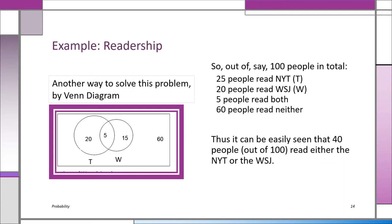Another way to look at this problem is with a Venn diagram, using 100 people to represent 100%. The 60 people out of 100 who don't read anything makes sense — we saw that the probability of reading anything was 40%. The overlap is 5 people (0.05). Adding: 5 + 15 = 20 people read the Wall Street Journal; 5 + 20 = 25 people read the New York Times. So 20 people read the Times but not the Wall Street Journal, and so on — the Venn diagram lays it all out clearly.